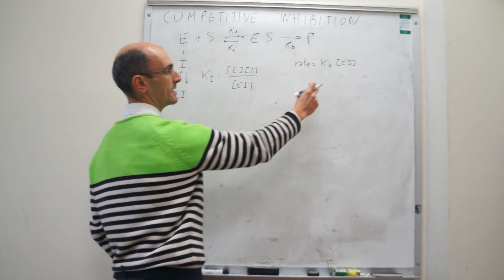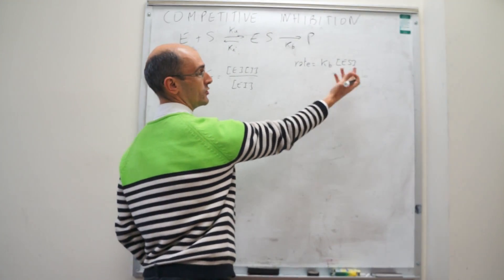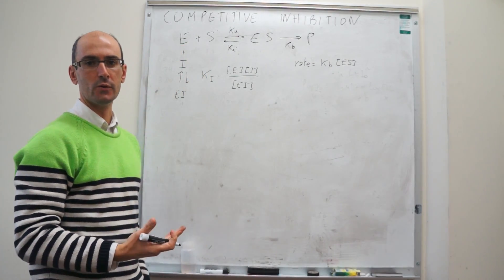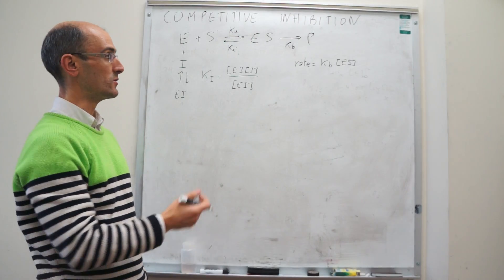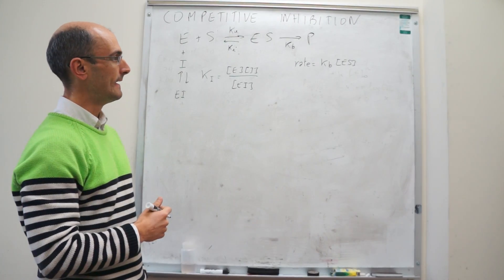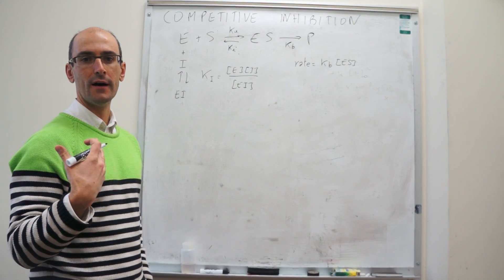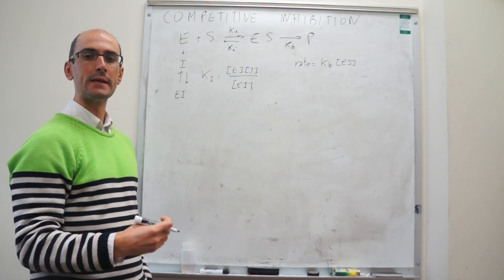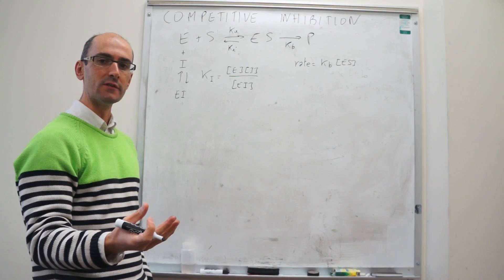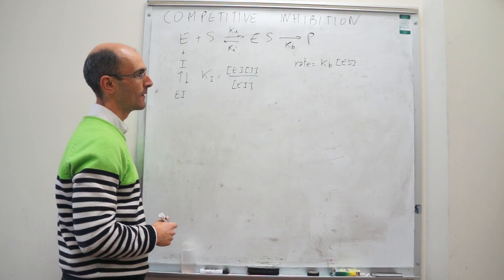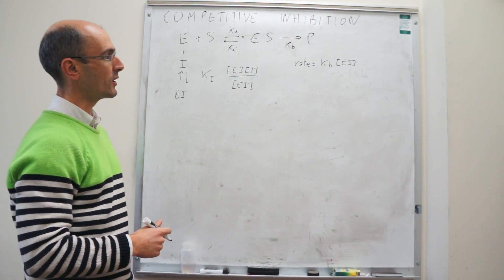ES is an intermediate and you cannot leave it in the rate law. The question is how are we going to get rid of it and put it as a function of the concentration of substrate, the concentration of inhibitor, and K sub I. We're going to start with the mass balance of the enzyme.